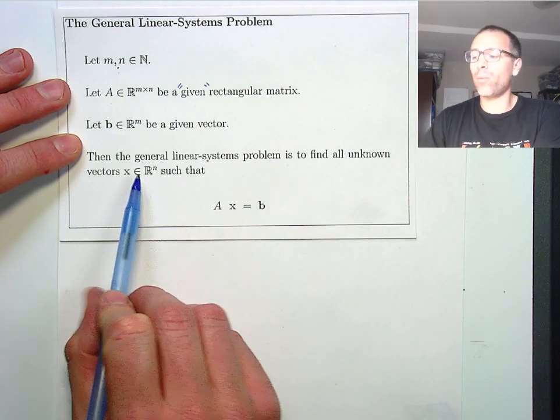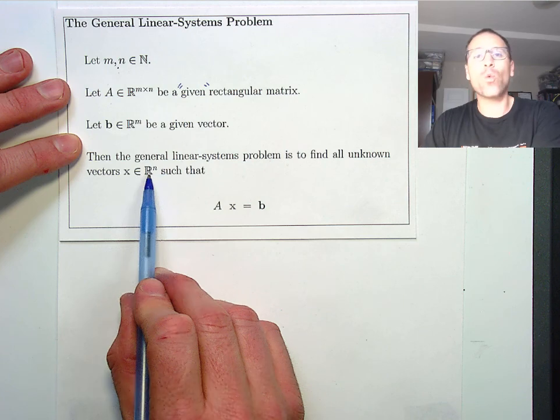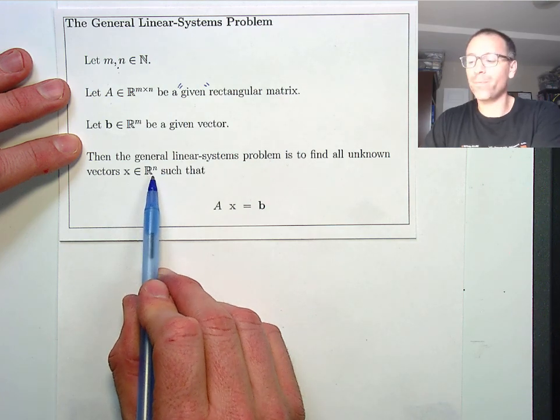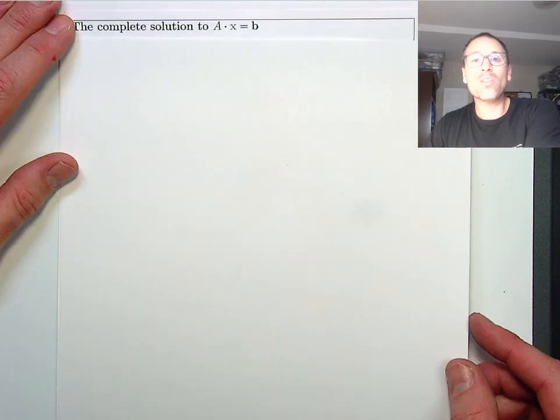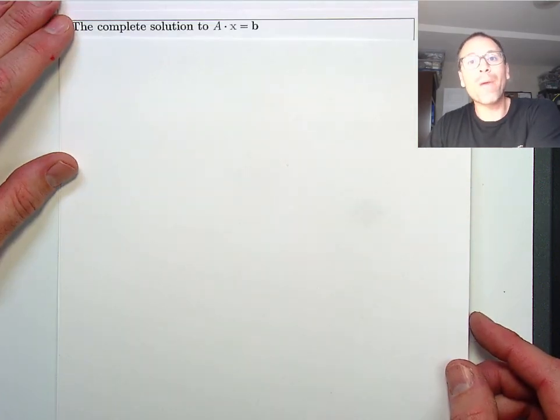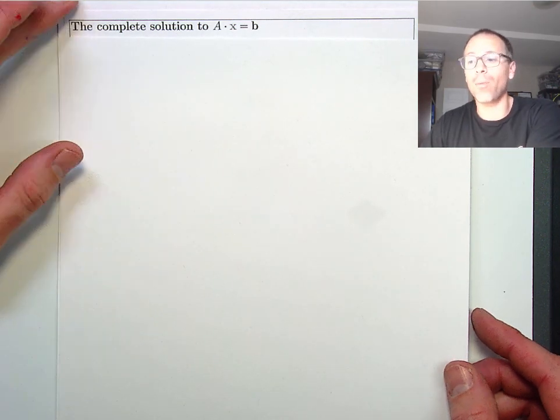The general linear systems problem is to find all unknown solutions x with n entries such that A times x equals b. In this lesson, we're going to study the template, the form, that complete solutions take to the A times x equals b problem.